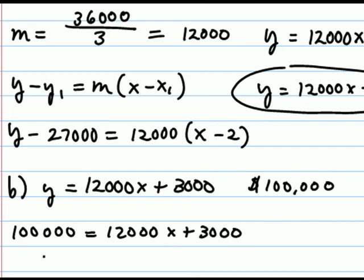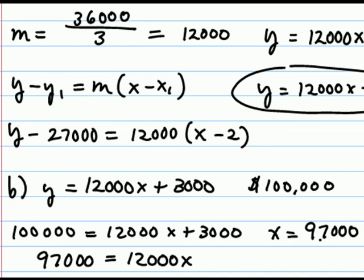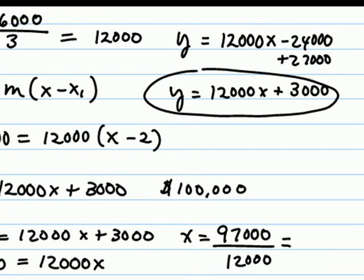To solve for x, we could first of all subtract 3,000 from both sides, which gives us 97,000 equals 12,000x. Dividing both sides by 12,000, x would be 97,000 divided by 12,000, which equals 8 and 1 twelfth.